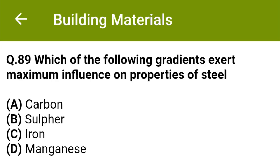Which of the following ingredients exerts maximum influence on properties of steel? Option A, carbon; option B, sulfur; option C, iron; option D, manganese. The correct answer is option A, carbon.